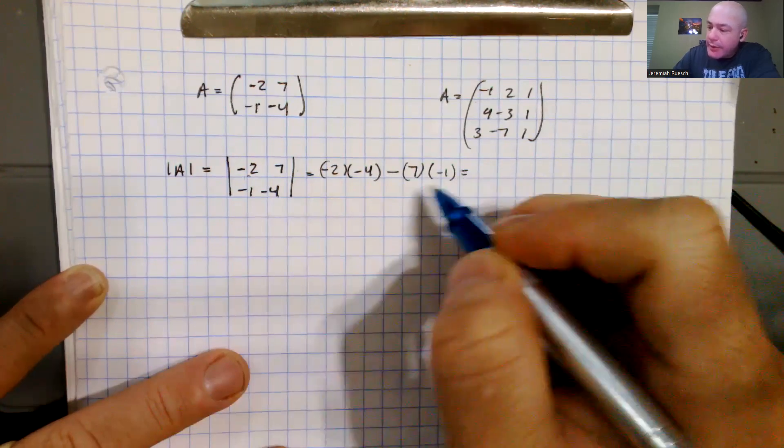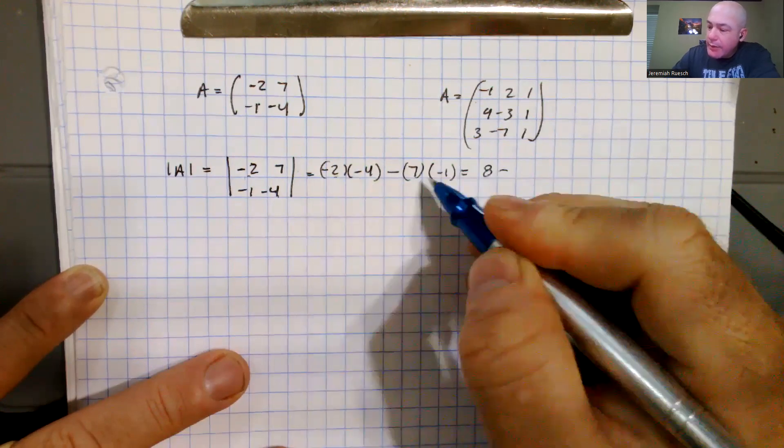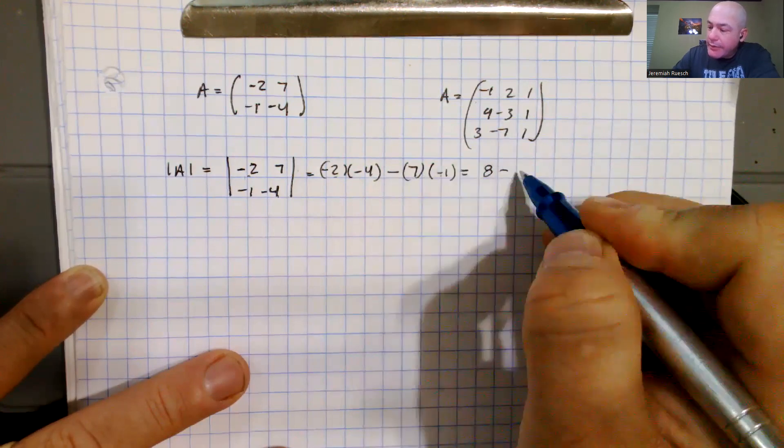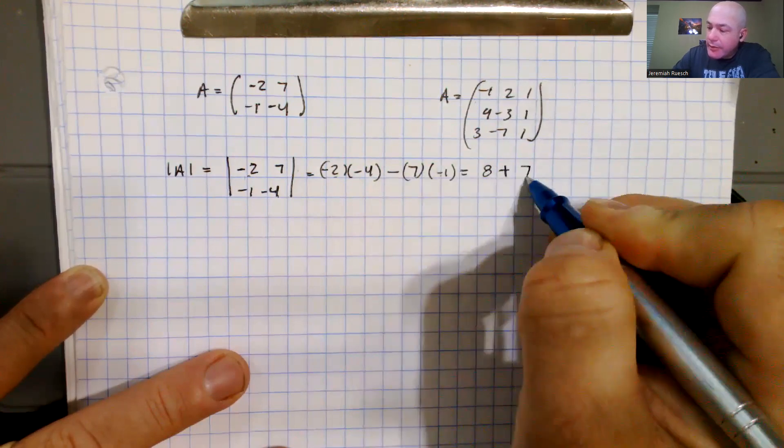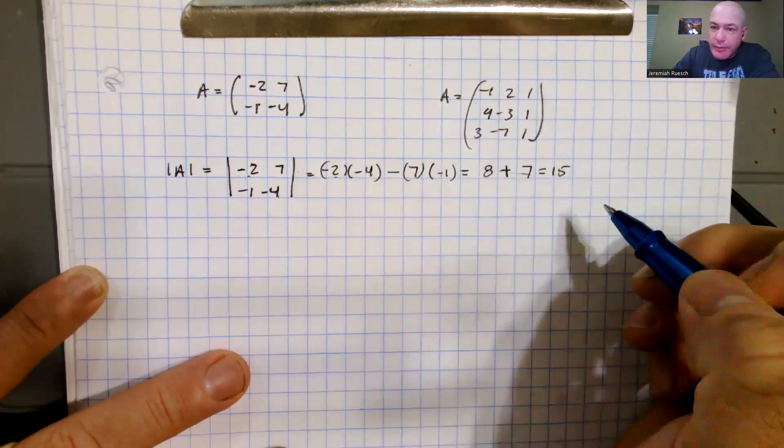And so if we carry this out, we have negative 2 times negative 4, which gives us 8, we have a negative 1 times a positive 7, and we have a minus sign there, so it can come up plus 7, and then if we add those two terms together, we get the result is 15.